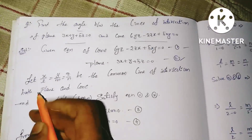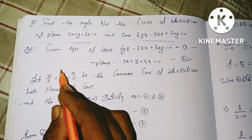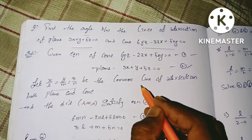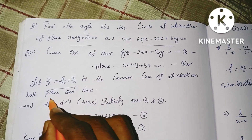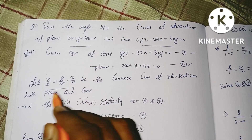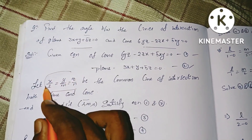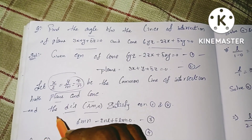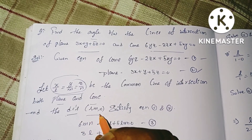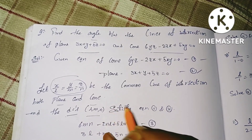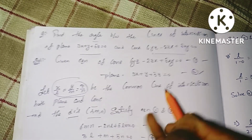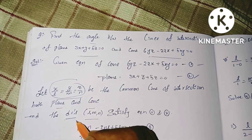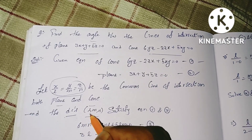Let x/l = y/m = z/n be the common line of intersection of the plane and cone. We will show the line of intersection with direction cosines L, M, N. We will show the L, M, N values.